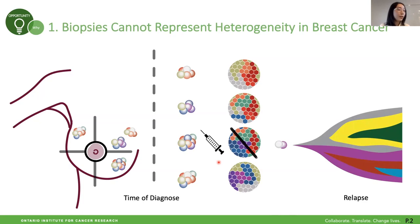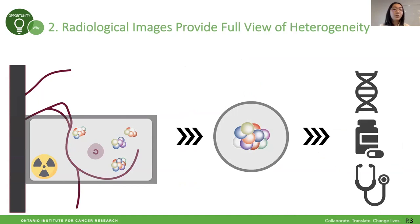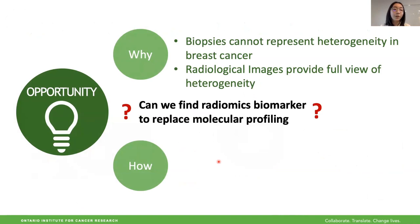Under the scope of radiological imaging, that's the only way we can get a fuller and unbiased view of heterogeneity for the whole tumor, which could lead us to a more precise treatment plan. At this point, we are questioning whether we can find radiomics biomarkers to replace molecular profiling based on the biopsy.